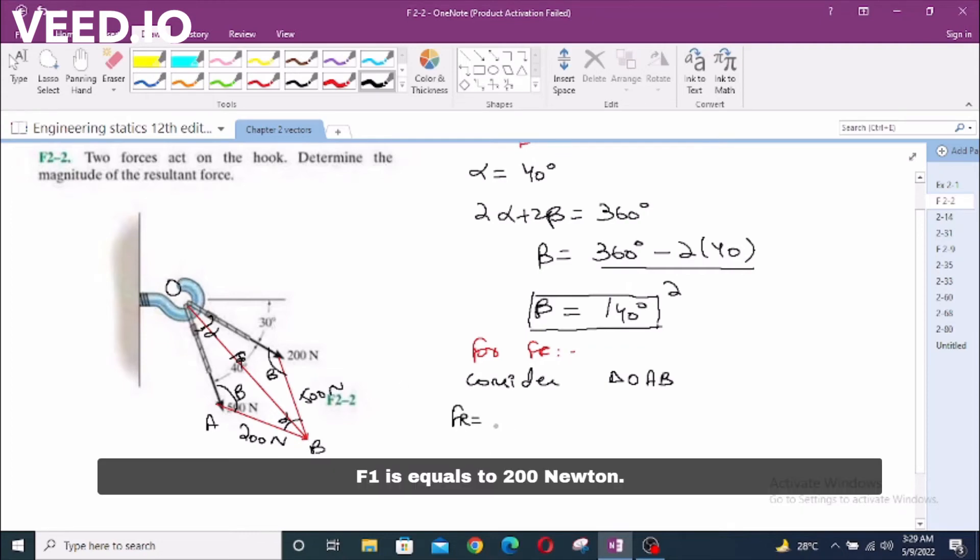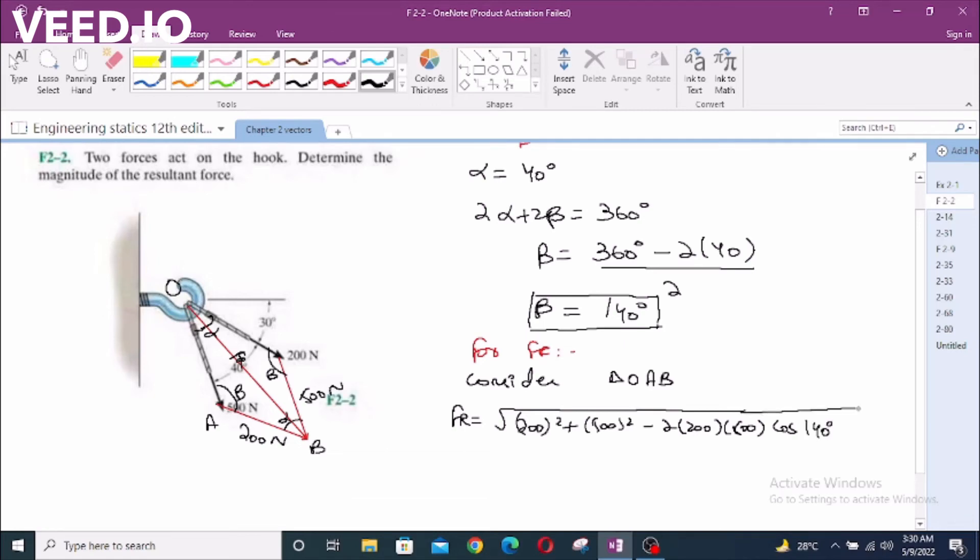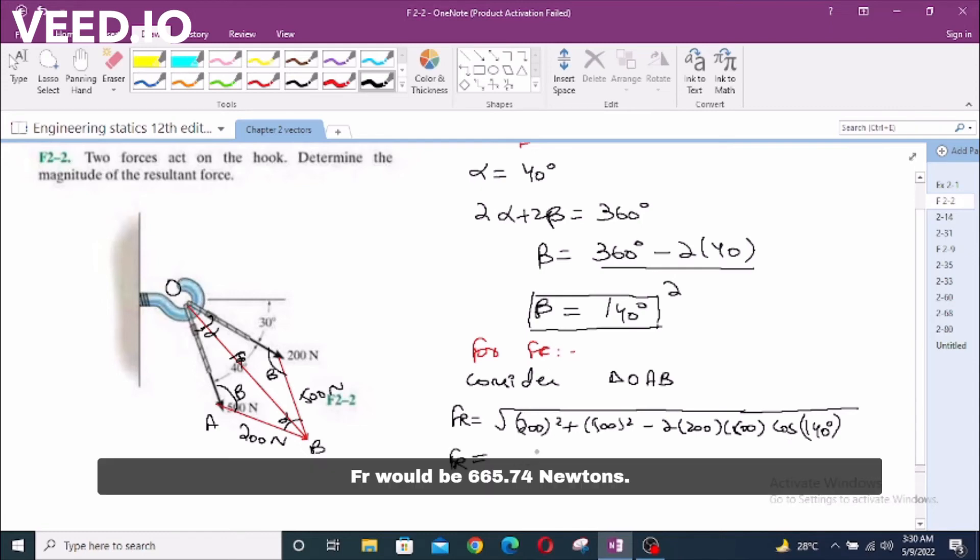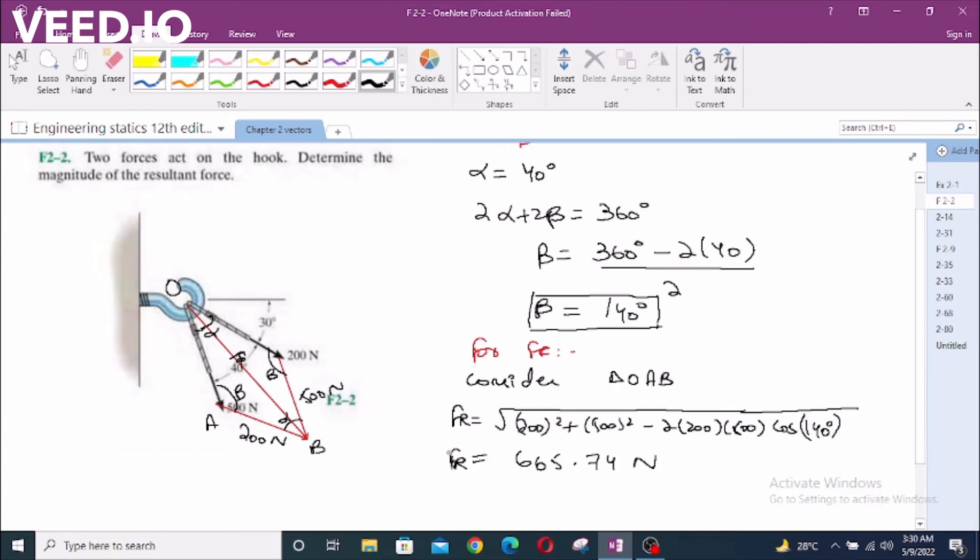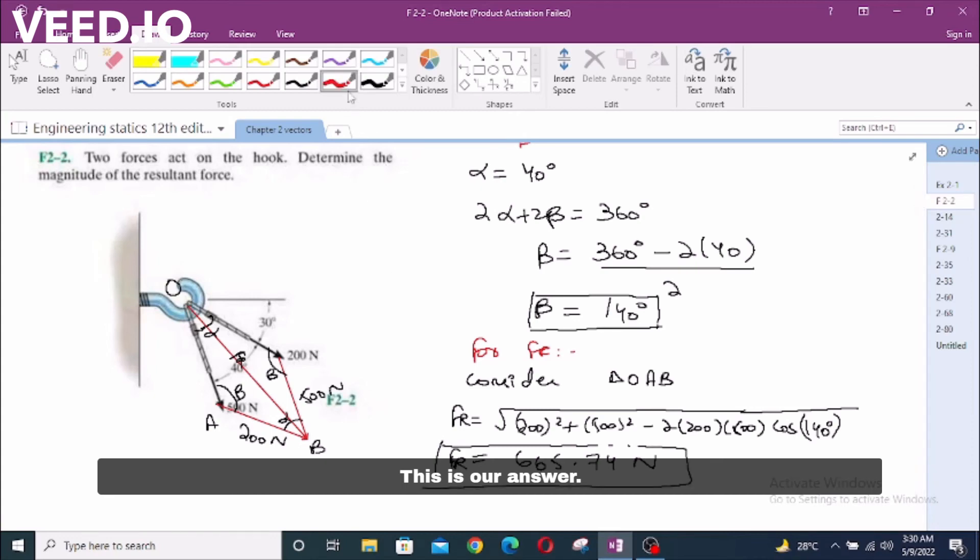Fr is equals to 200 Newton square plus 500 square minus 2 times 200, 500 cos beta which is Beta equals to 140 degrees. F R would be 665.74 Newtons. This is our answer.